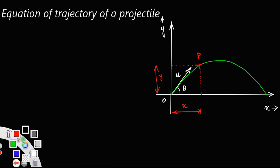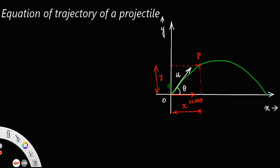You can resolve the initial velocity u into one component along the x axis and another component along the y axis. The component along the x axis will be u cos theta, and the component along the y axis will be u sin theta.